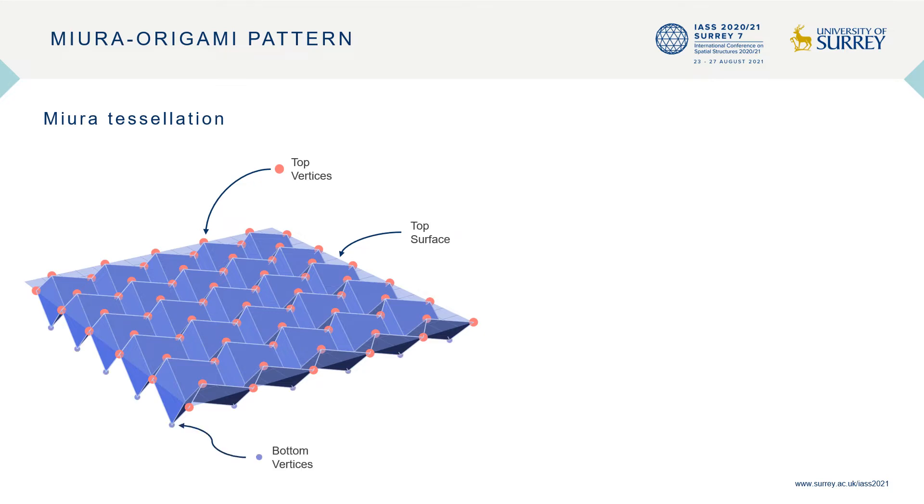Similarly, the bottom vertices lie on an imaginary bottom surface. The two surfaces are parallel to each other and are offset by a distance or thickness d which depends on the folded state of the structure.